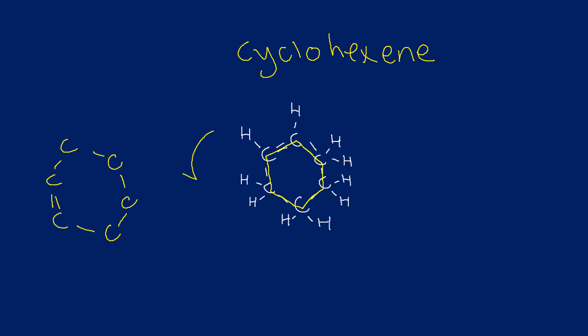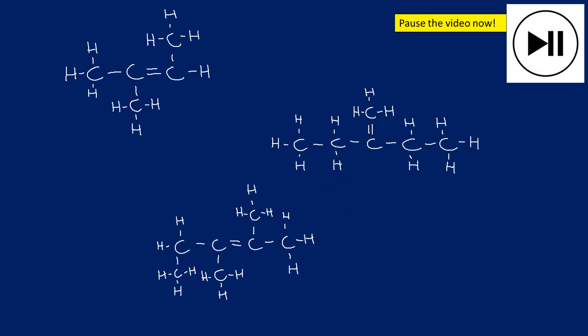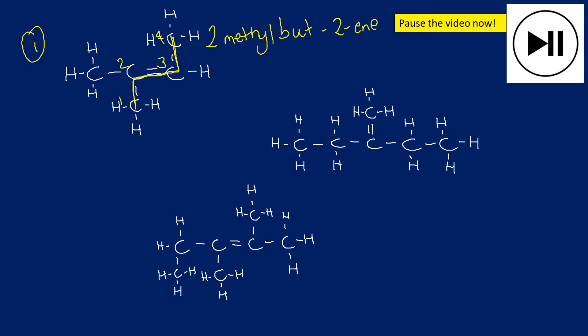Pause the video and attempt the practice questions. When you're ready to see the answers, unpause and we'll go through them. First one — be careful: the longest chain is actually four carbons (1, 2, 3, 4). It's butene. The double bond position makes it but-2-ene. There's a side chain on carbon two, and it's a methyl group, so the answer is 2-methylbut-2-ene.